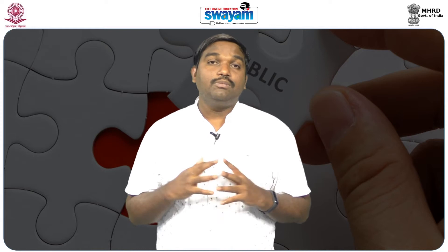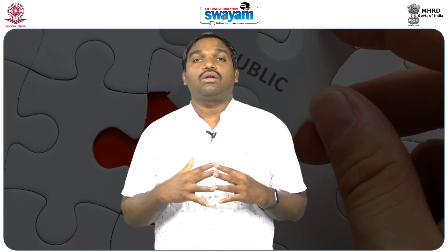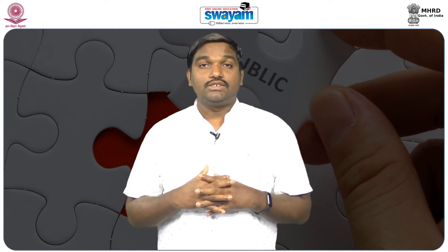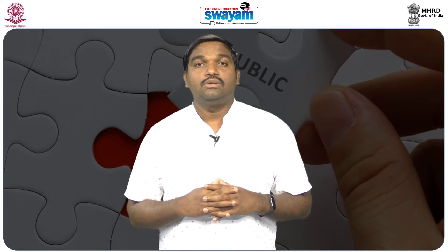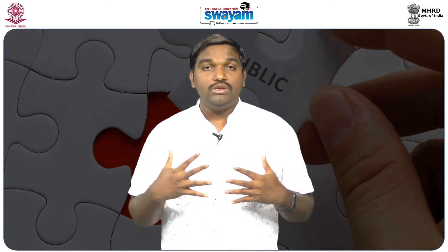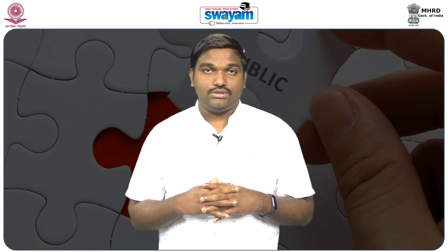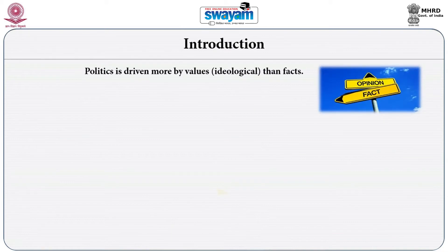You know that public policy and politics are closely intertwined. Though Woodrow Wilson long time back said that politics and administration are two separate disciplines, there is an umbilical cord establishing a relationship between politics and administration. Conventionally speaking, politics is driven by values, whereas public policies in technical terms are supposed to be fact-oriented without beliefs, without ideologies. This topic on evidence is very recent in the literature of public administration.